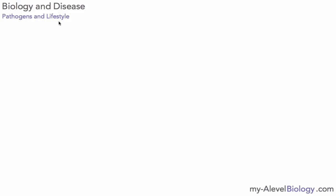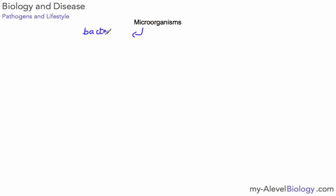Hello and welcome. For this AS level biology topic we are looking at biology and disease, in particular pathogens and lifestyle, and how these two have an effect on the health of individuals. When we talk about pathogens we are often talking about microorganisms. The three main ones we focus on are bacteria, viruses, and fungi. There are very many different types of microorganisms that are harmless, and some are quite useful, but when we're talking about ones that cause disease we are talking about pathogens.